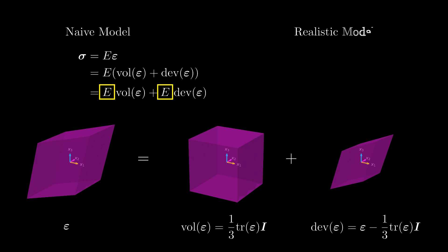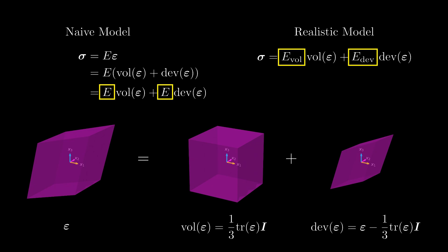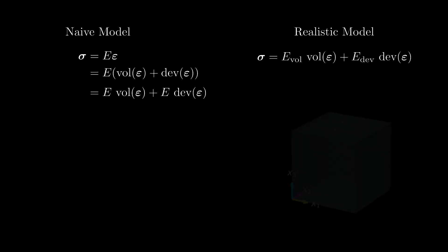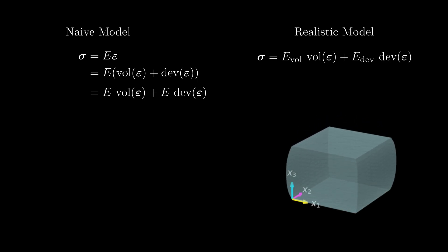To accurately model the Poisson effect, we introduce two different material parameters — eVol and eDef — so that the volumetric and deviatoric parts of the strain contribute differently to the stress. These parameters are determined from experiments. Since most materials are more resistant to volume change than to shape change, we typically observe that eVol is greater than eDef. This is the linear elastic material model in 3D. Implementing it in the simulation, we now observe the expected Poisson effect — all we had to do was change from one parameter to two.